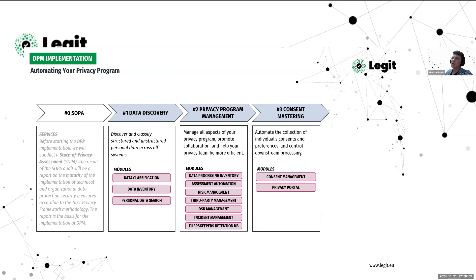As part of the consent mastering product we have the privacy portal — a self-service portal for individuals where they can manage their privacy settings, including managing consents and preferences, viewing which data you have about them, downloading their data if you provide that option, and requesting fulfillment of their rights such as asking for their data to be deleted or requesting access to the data you have about them.